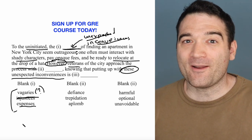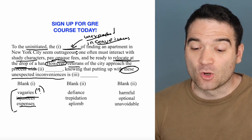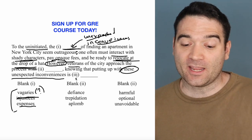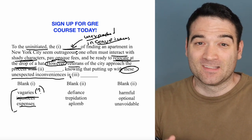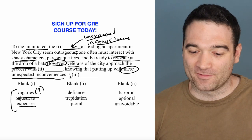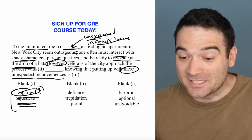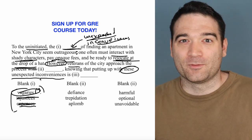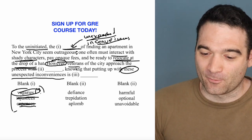Are we talking about how much money they're spending? In part yes, but there's also relocating at the drop of a hat. The act of relocating or interacting with shady characters doesn't necessarily involve paying money — it's just an unexpected inconvenience. Money might be part of that, but it's not all of it. So 'expenses' is out. That means the first blank is 'vagaries,' which, for the record, means something unexpected — like the vagaries of the weather, which might blow in one direction and then another.